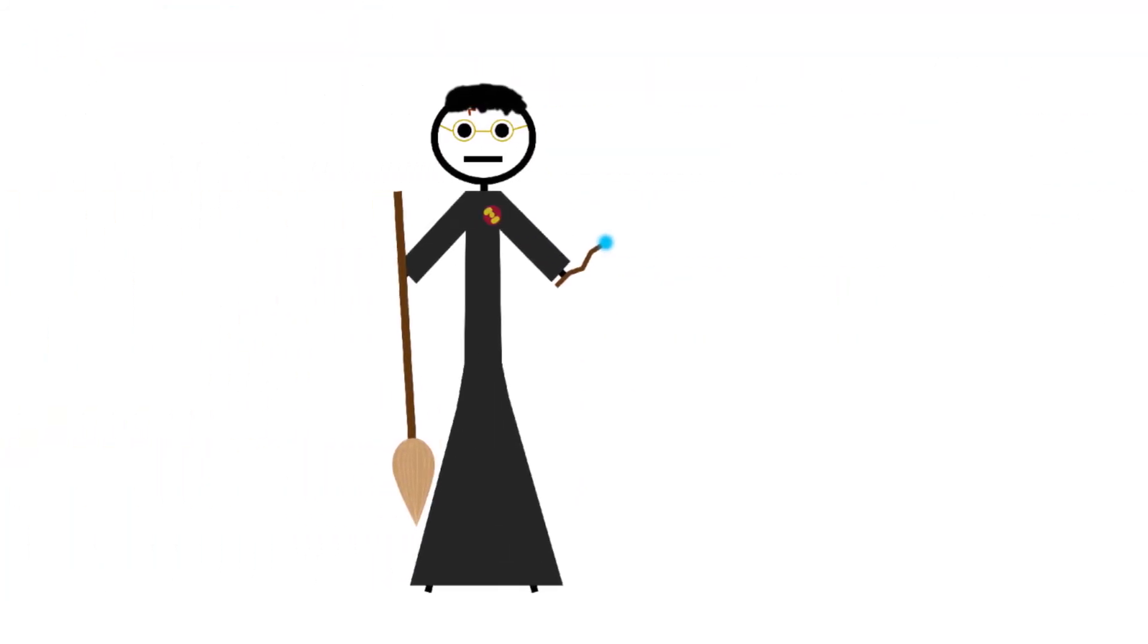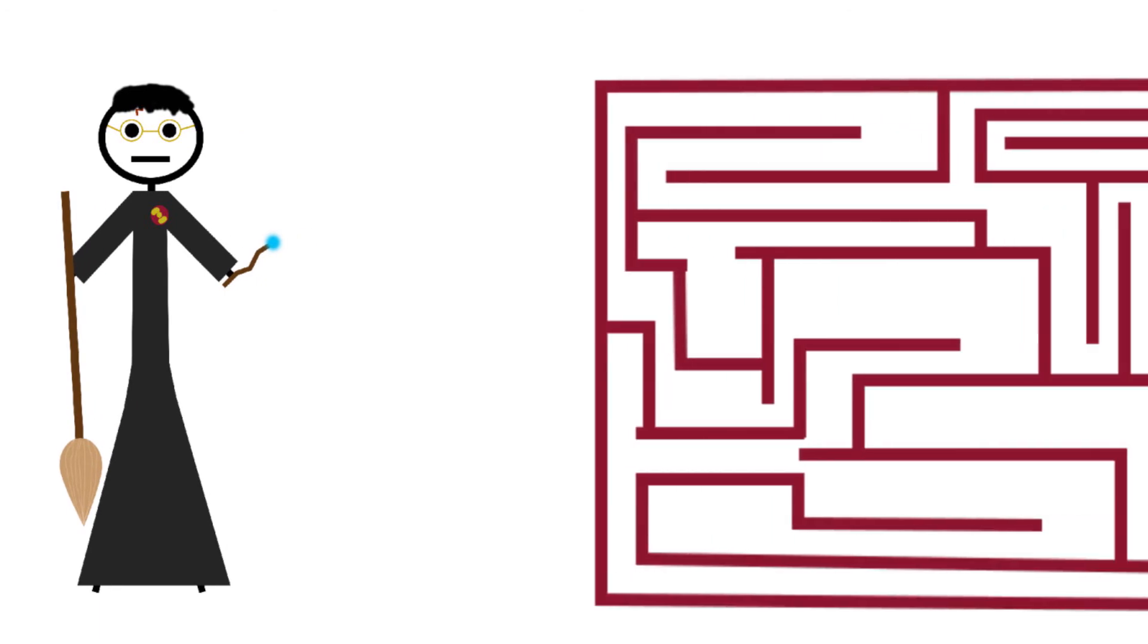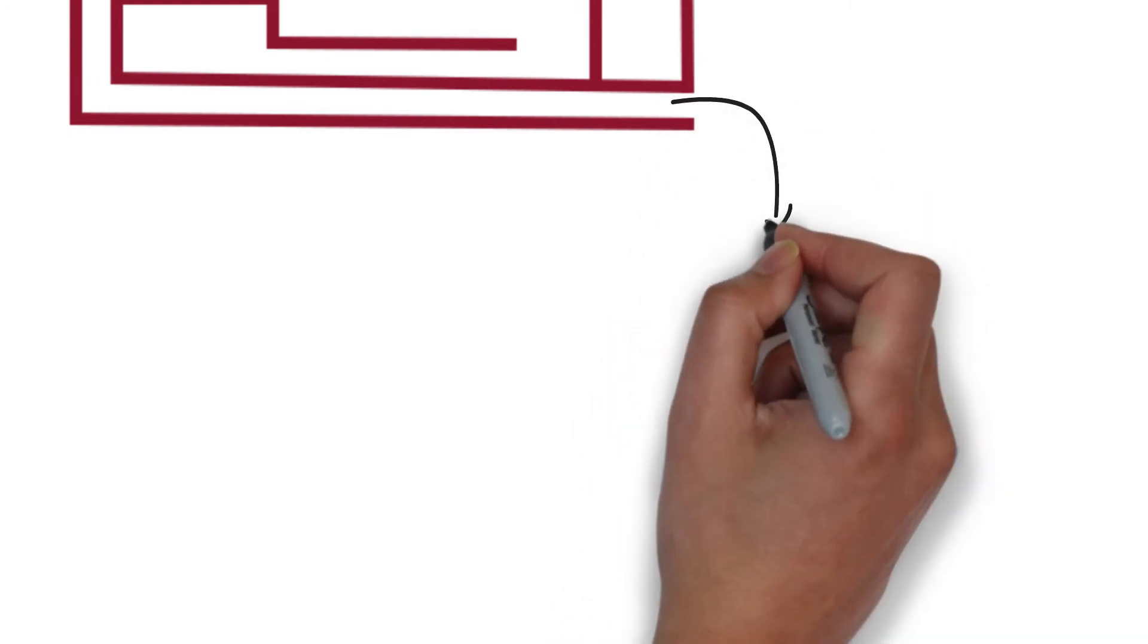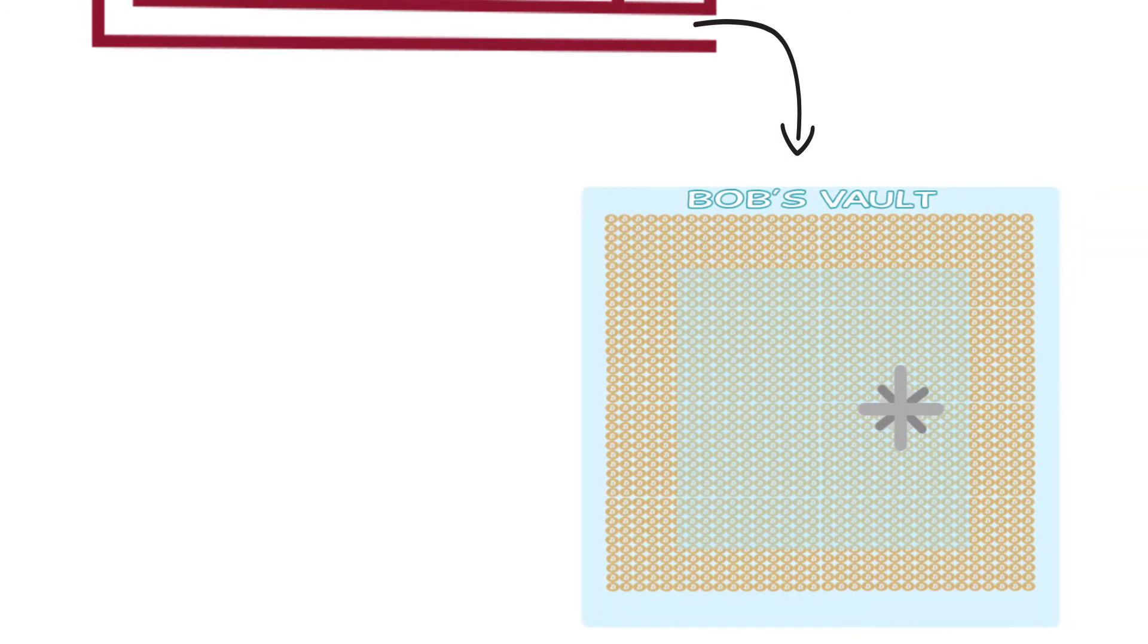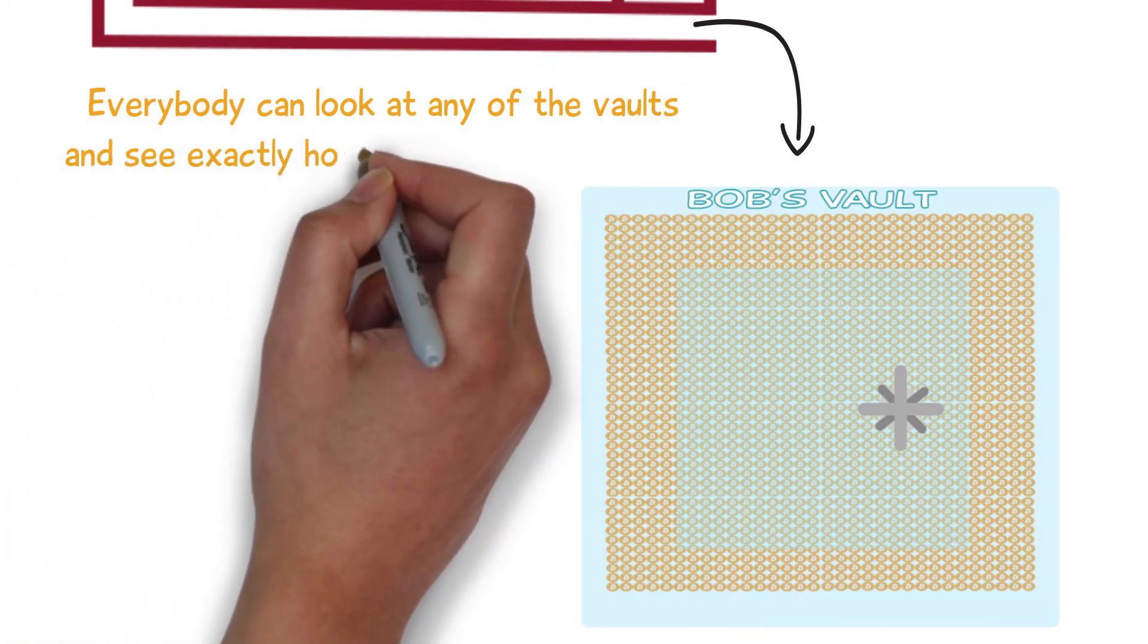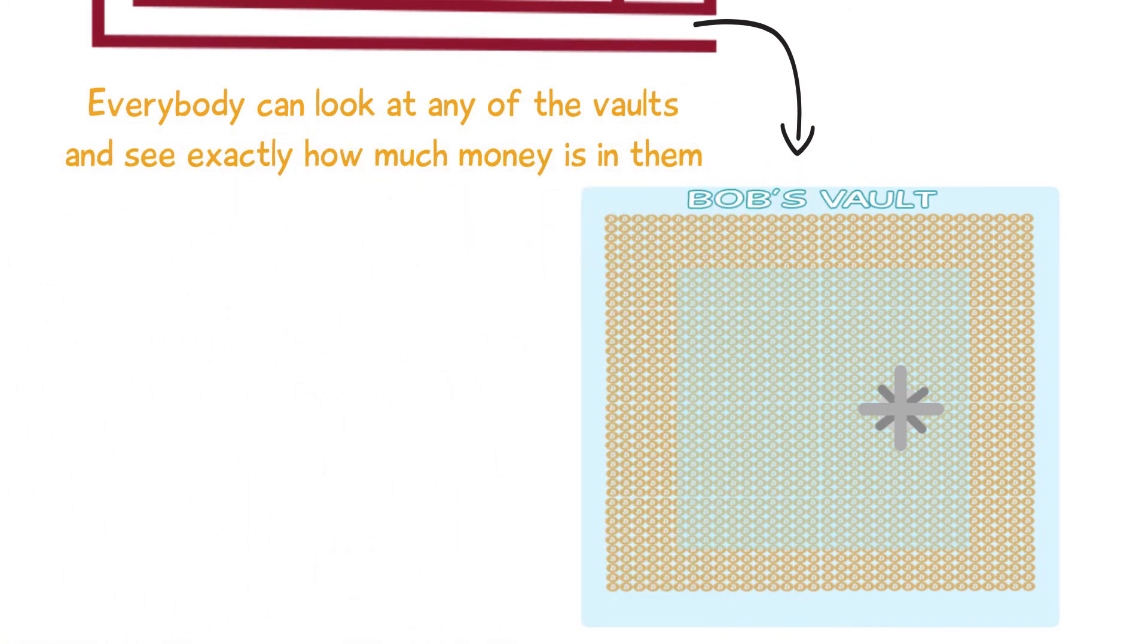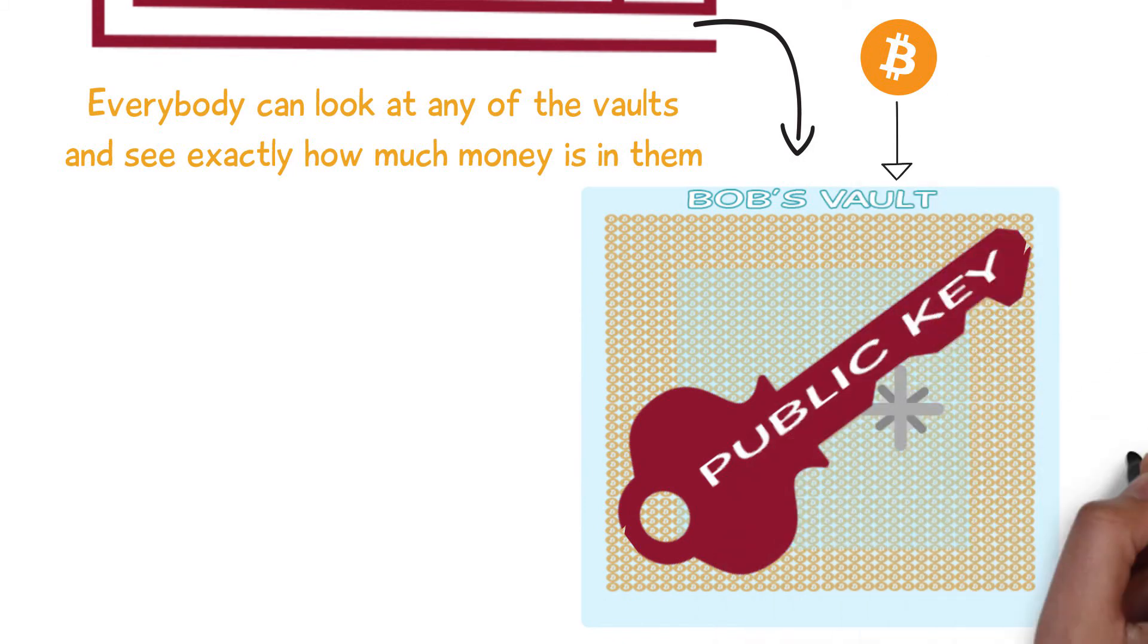Time for an analogy. Remember when Harry Potter went to the Gringotts bank? They went down into this big labyrinth full of vaults that were hidden from everyone to see. Now imagine the exact opposite of that. A huge hall filled with vaults that are all made from unbreakable glass. Everybody can look at any of the vaults and see exactly how much money is in each of them. On top of each vault there is also a big slit in which people can put money, kind of like a piggy bank. These vaults are the public keys or the addresses. It's where other people send you shiny coins.